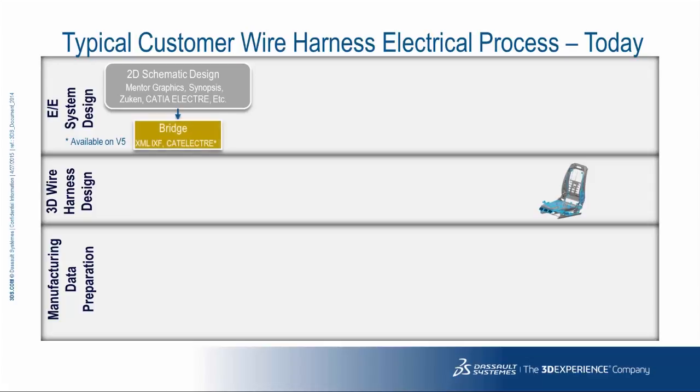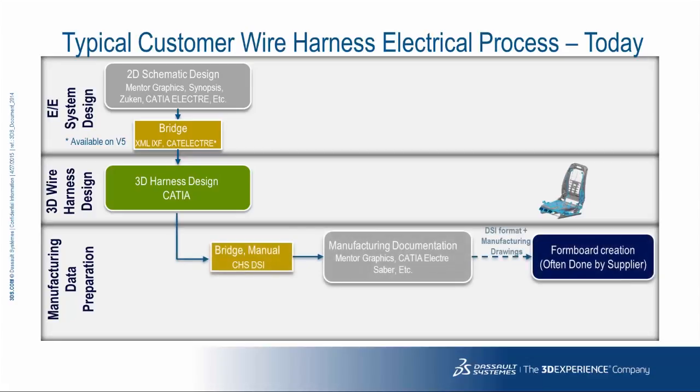In the 3D wire harness design phase, we have the creation of the complete representation of the 3D harness design in context of the product's digital mock-up. In this case, we'll assume this is done with CATIA, either V5 or V6. In manufacturing data preparation, again many different tools are used in the industries.